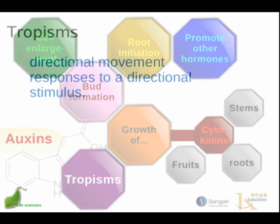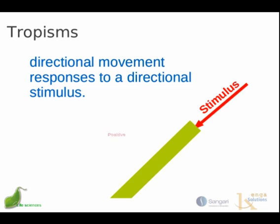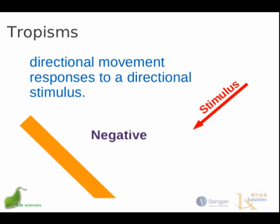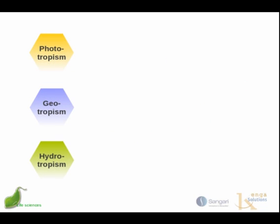One of the best ways to see the influence of hormones in plants is to look at the role of auxins and their influence on tropisms. Tropisms represent a directional movement or growth response to a directional stimulus, such as light, gravity, or the availability of water. The stimulus is directional and the movement might be positive — towards the stimulus — or negative — away from the stimulus. There are three types of tropisms: phototropism, geotropism, and hydrotropism.